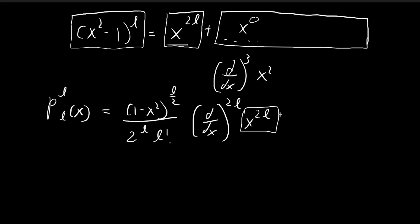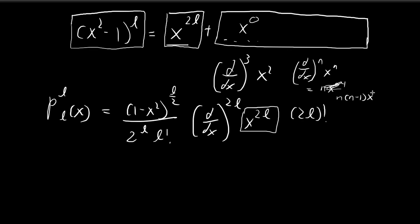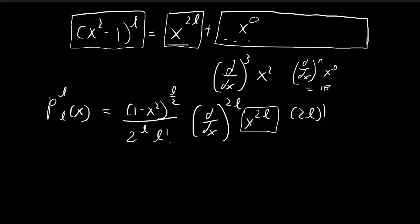This term is easy to differentiate. If we differentiate x^(2L) a total of 2L times, we get (2L) factorial. This follows because differentiating x^n a total of n times gives n·(n-1)·(n-2)·…·1 = n factorial. By the same concept, differentiating x^(2L) exactly 2L times yields (2L) factorial. So this whole term becomes (2L) factorial.